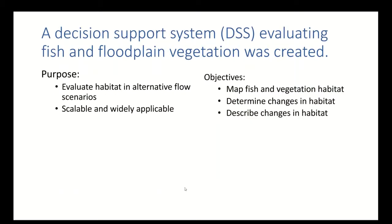A Decision Support System evaluating fish and plant vegetation was created. The purpose of this project was to evaluate habitat and alternative flow scenarios and also have a scalable and widely applicable tool so that USGS and U.S. Forest Service didn't need to create a new tool every time they had a new project. Our objectives were to map fish and vegetation habitat, determine changes in habitat, and describe those changes.